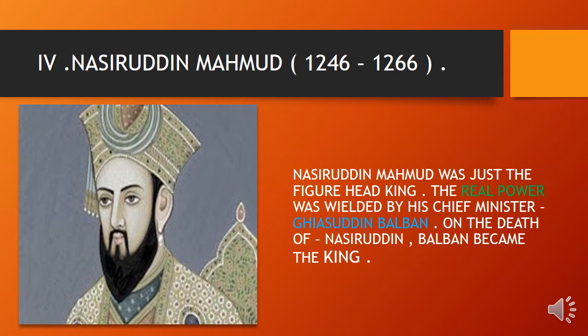Nasruddin Mahmud was just a figurehead king — the real power was wielded by his chief minister, Ghiyasuddin Balban. Similar to how India's president is a nominal head while real powers lie with the prime minister, Nasruddin Mahmud was a nominal king. After the death of Nasruddin Mahmud, Balban became the next king.